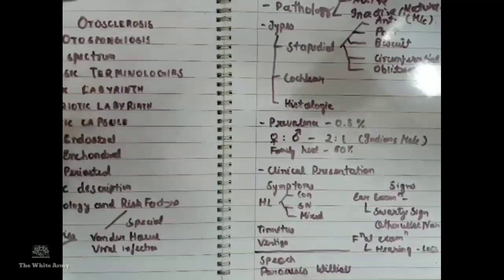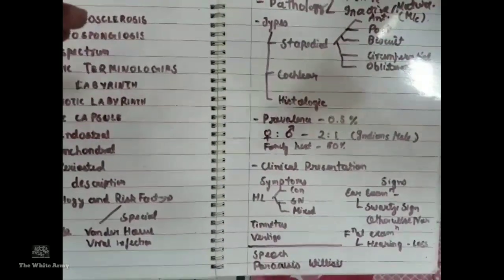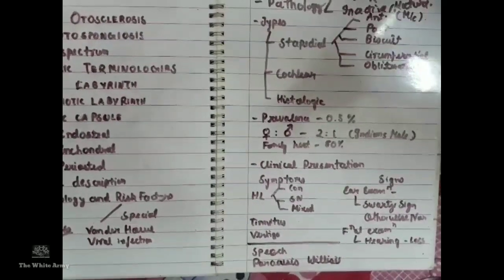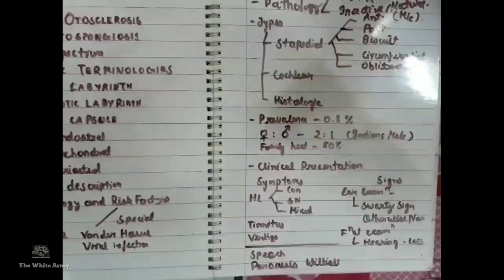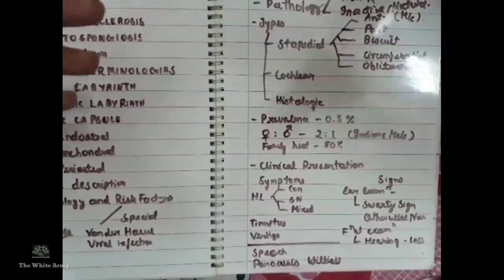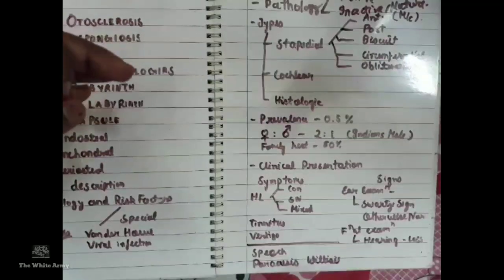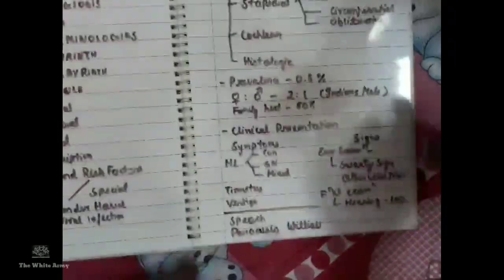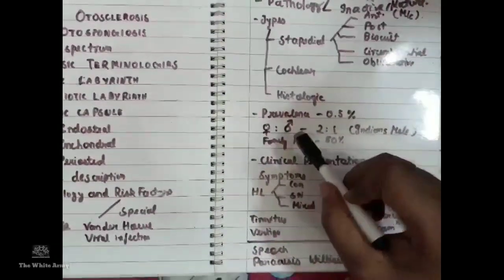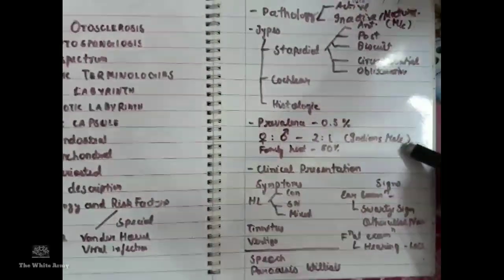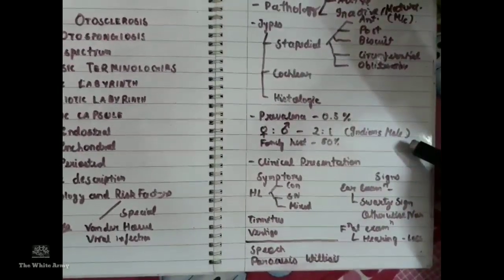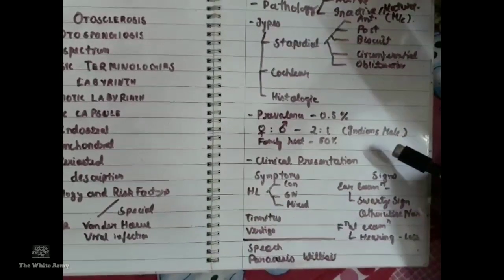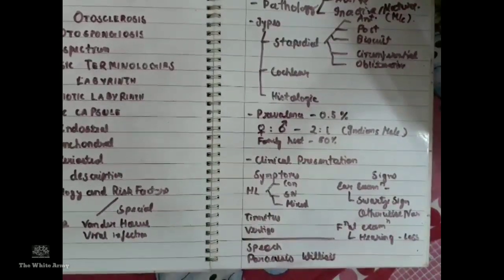The disease is exacerbated by sudden and severe physiological changes in the body — such as major trauma, pregnancy, or after menopause. Prevalence is 0.5%. The female-to-male sex ratio is 2:1 globally; however, in Indians, males are more predominant, perhaps due to increased turnout of male patients rather than female.